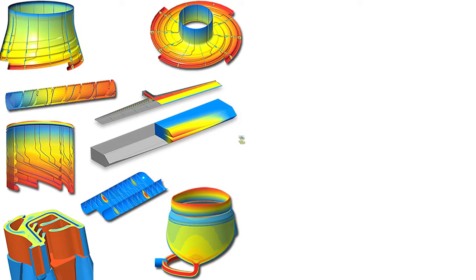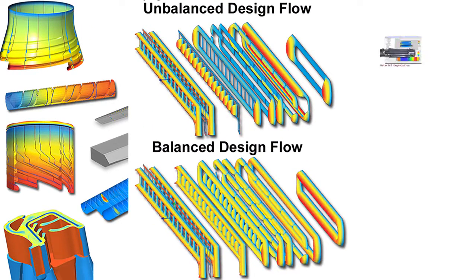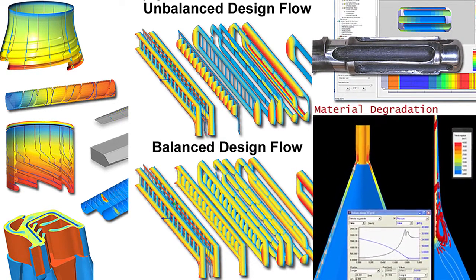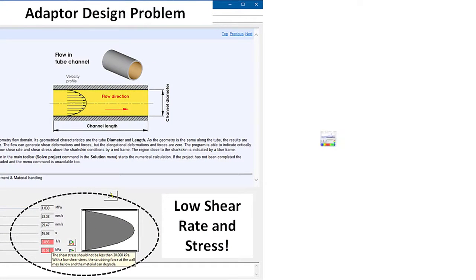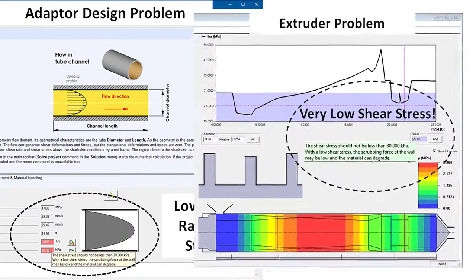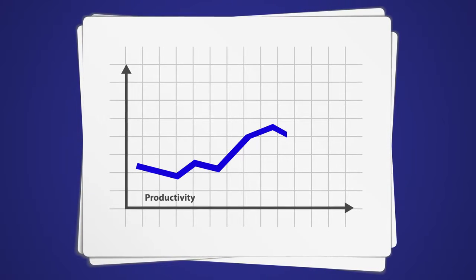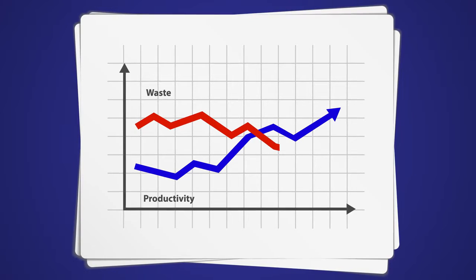The CompuPlast Virtual Extrusion Laboratory software allows you to predict and manipulate your designs digitally so you can test performance and optimize the design before cutting steel. Automatic design checking uses established parameters to alert users to potential design problems and inefficiencies. Not only does this simulation help maximize productivity and prevent potential problems, but it also virtually eliminates waste from costly trial and error development procedures.